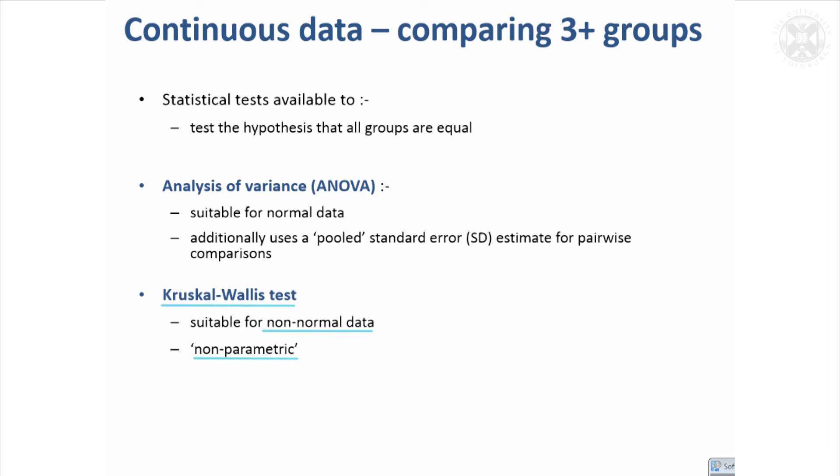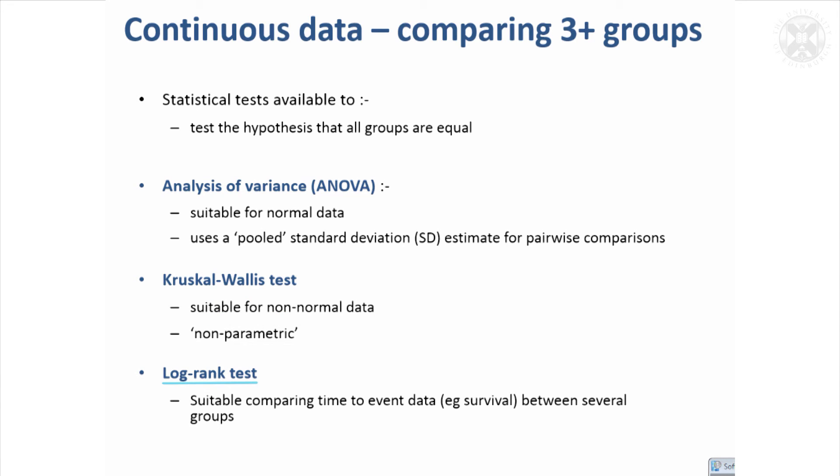The log-rank test I briefly mentioned for survival data - just to say that's also appropriate if you've got three or more groups. It can cope and it will test the null hypothesis that there's no difference between the groups. So if you've got time to event or survival data.